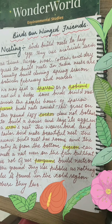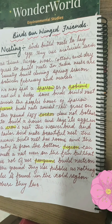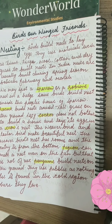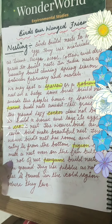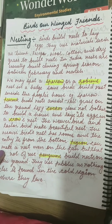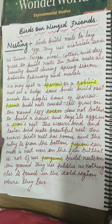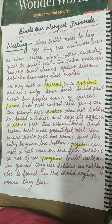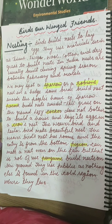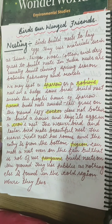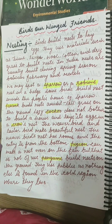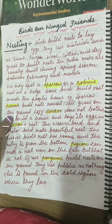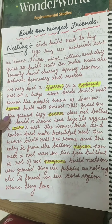Good morning everyone! I hope you all are fit and fine and doing good. In today's video we will finish the chapter 'Birds: Our Winged Friends'. It is chapter number 3. In the last video we already covered birds, their beaks, and their eating habits. In this video we will cover birds' nesting, their migration, and the types of wings and feathers. Okay, so let's start.